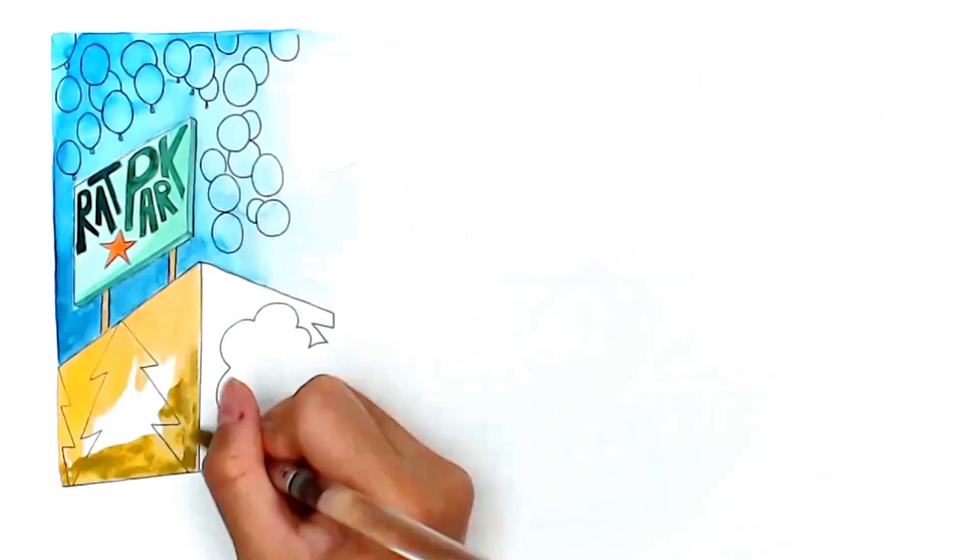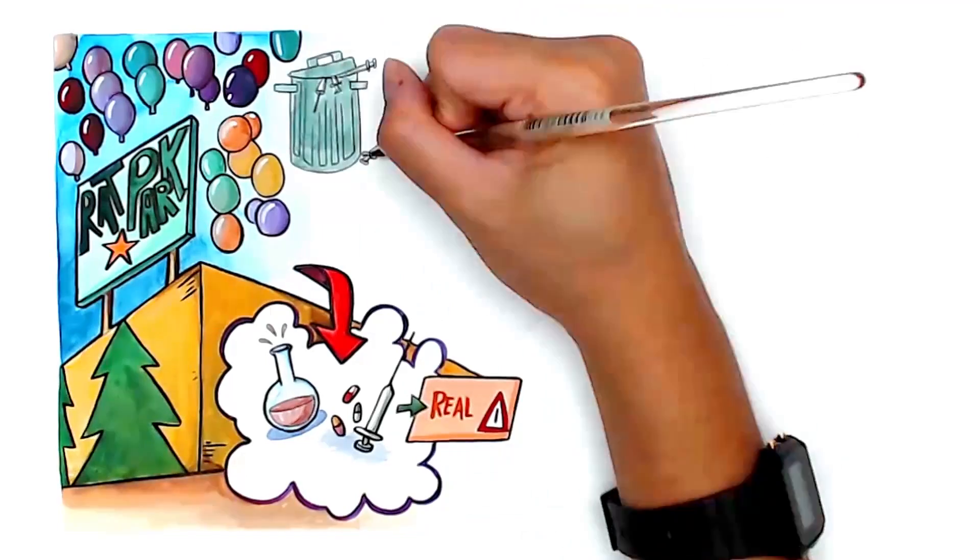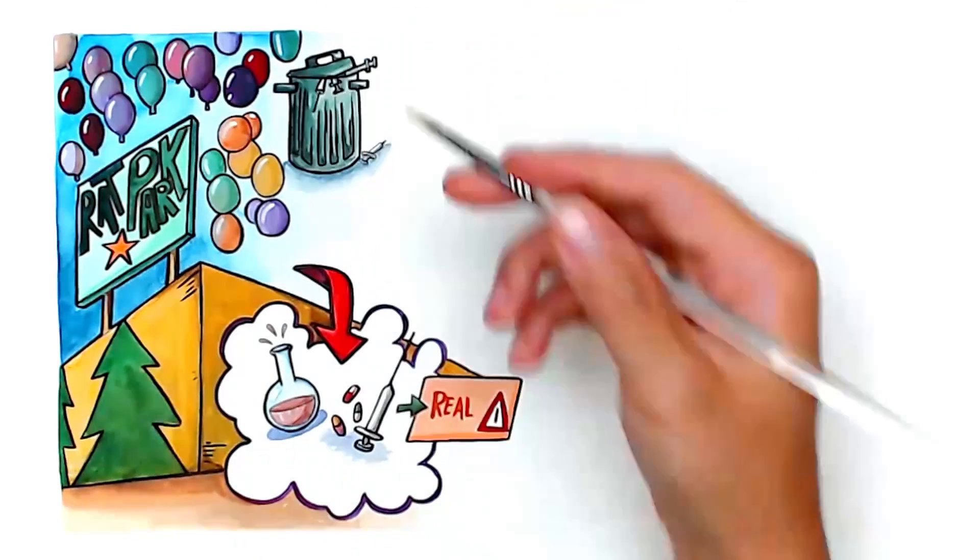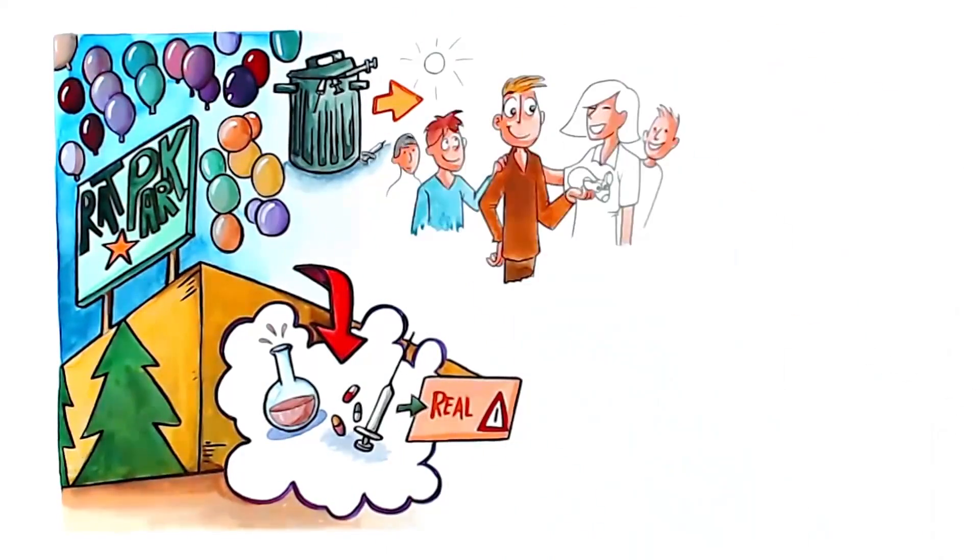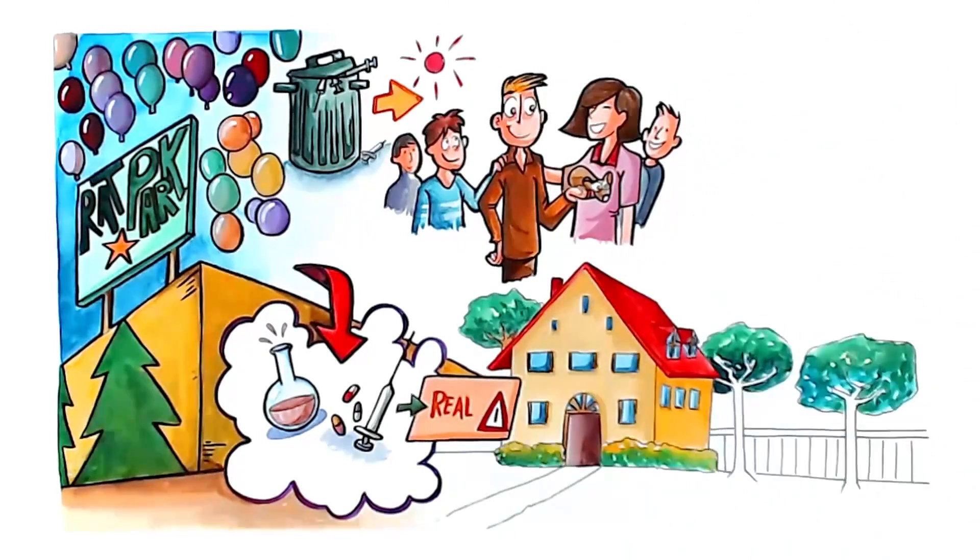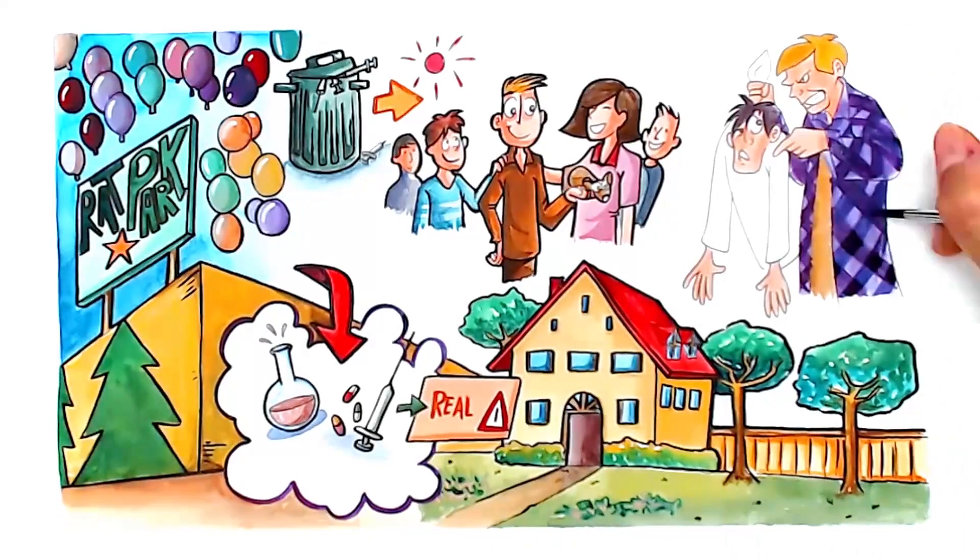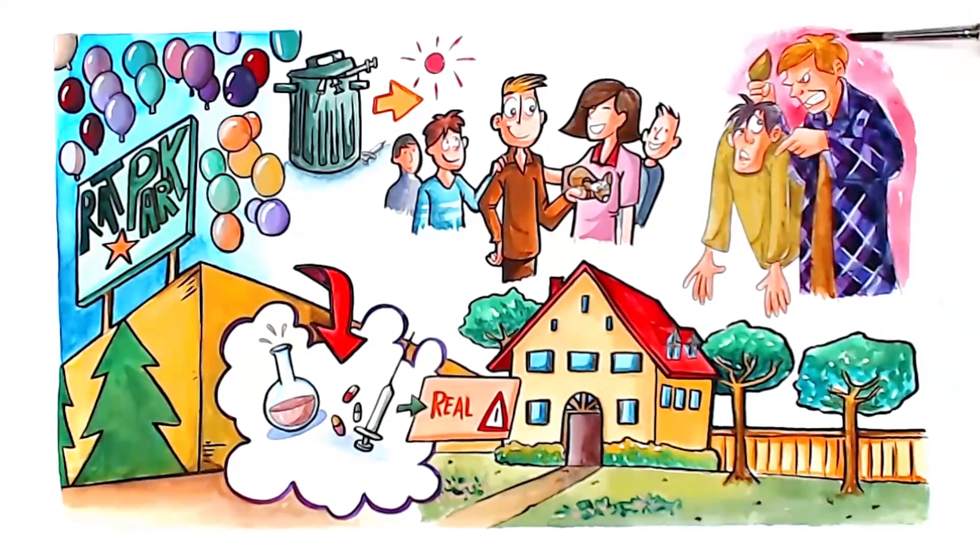The rat park experiments didn't show that chemical addictions don't exist, but it showed that they are not the only thing that matters in drug abuse. Maybe a person's access to a functioning social life and a lush cage are even more important than continuing the war on drugs mission of making drugs unavailable and penalizing the users.